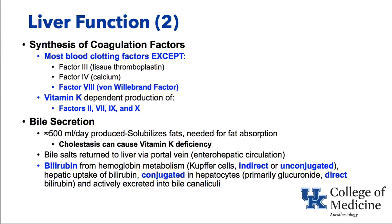The liver also secretes bile — up to half a liter per day can be produced. It solubilizes fats as it goes down the bile duct into the intestine, allowing reabsorption of fats. If cholestasis occurs without bile secretion, you may not absorb the fat-soluble nutrients you need, vitamin K deficiency can occur, and coagulation issues result. The bile salts go from the liver down the bile duct into the gut and back through the portal vein to the liver — this is termed the enterohepatic circulation. Bilirubin can come from hemoglobin metabolism; for example, hemolysis of transfused blood. That indirect or unconjugated bilirubin can be taken up by the liver, conjugated in the hepatocytes by adding a glucuronide molecule to make it direct bilirubin, and actively excreted into the bile canaliculi.